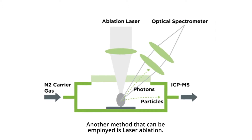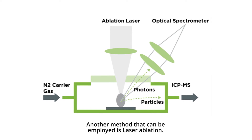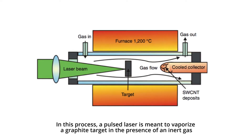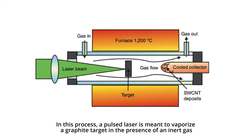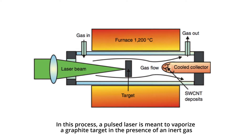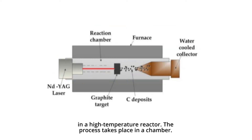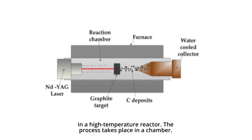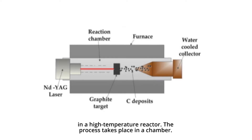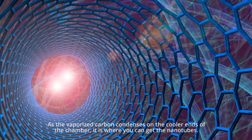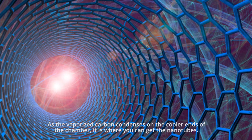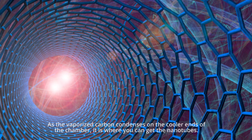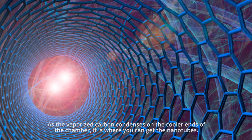Another method that can be employed is laser ablation. In this process, a pulsed laser is used to vaporize a graphite target in the presence of an inert gas in a high-temperature reactor. The process takes place in a chamber. As the vaporized carbon condenses on the cooler ends of the chamber, it is where you can get nanotubes.